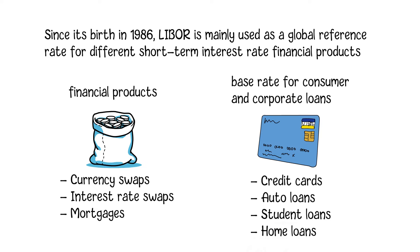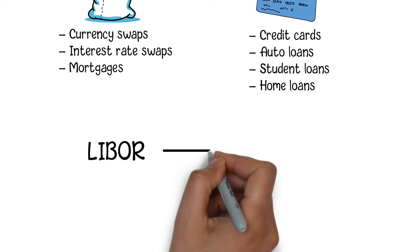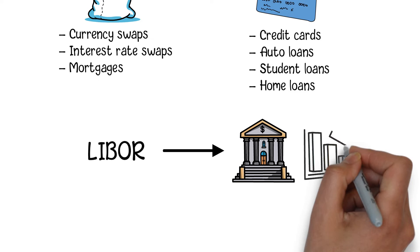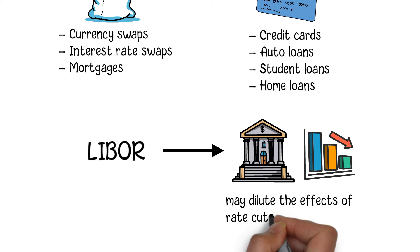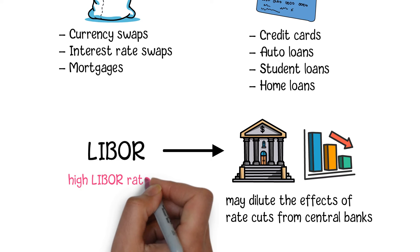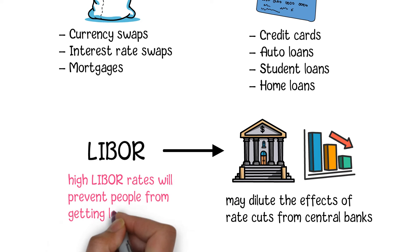Since LIBOR is an important reference for the interest rates of financial products, it may dilute the effects of rate cuts from central banks. If the central bank cuts rates but LIBOR rates stay at a high level, those high LIBOR rates will still prevent people from getting loans, making the rate cut less effective for the loan market.